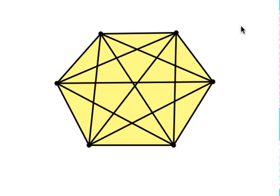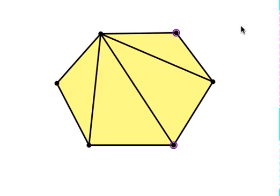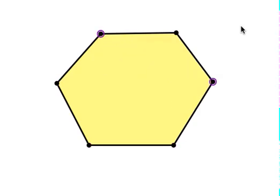And you can just count them again as we erase them. One, two, three, four, five, six, seven, eight, nine. Nine diagonals in a hexagon.